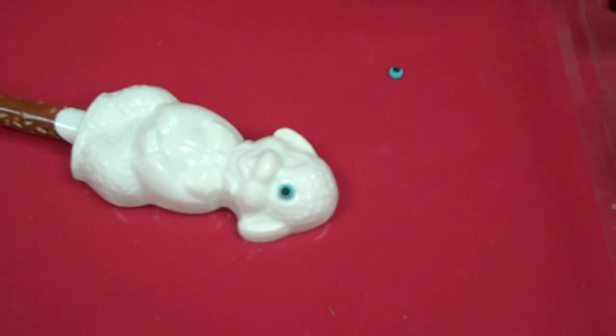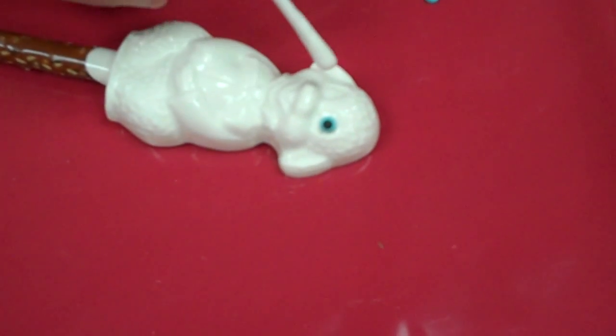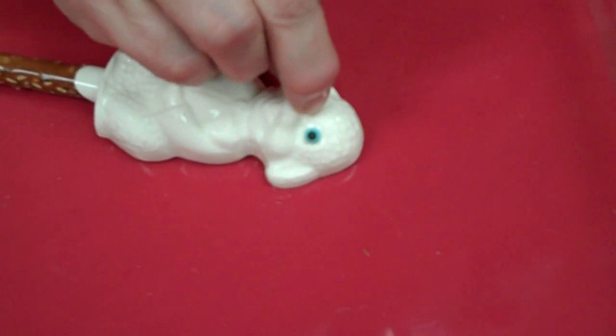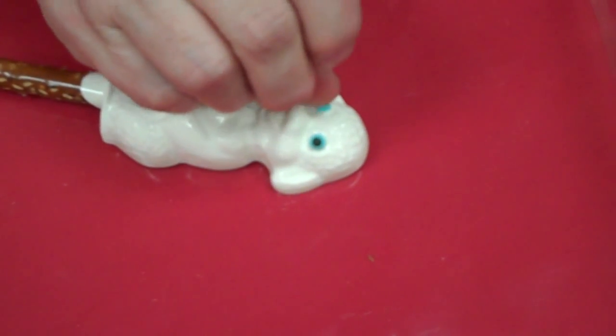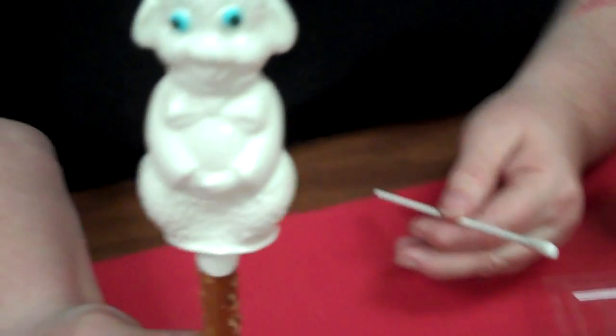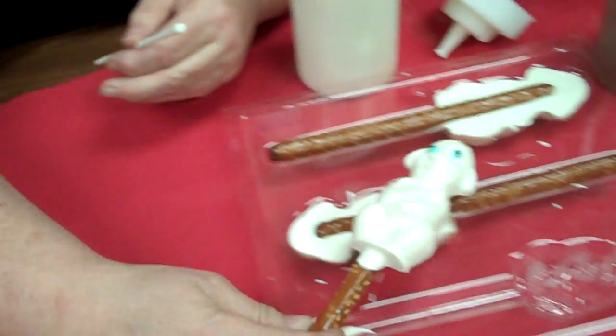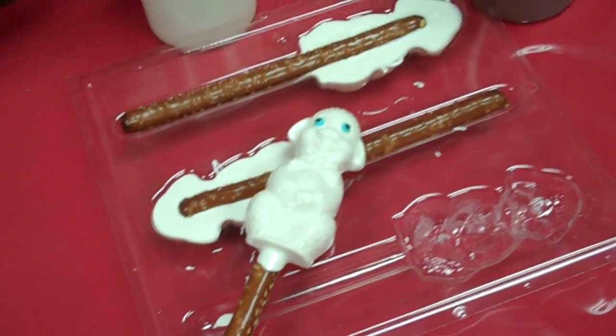And we're going to take and pick up that little eyeball and stick it right on. And then over here, another little dab of melted chocolate. And put that one right on. Now, there you go. Isn't that cute? Very nice lollipop pretzel pop. You can stick that right in your children's basket.